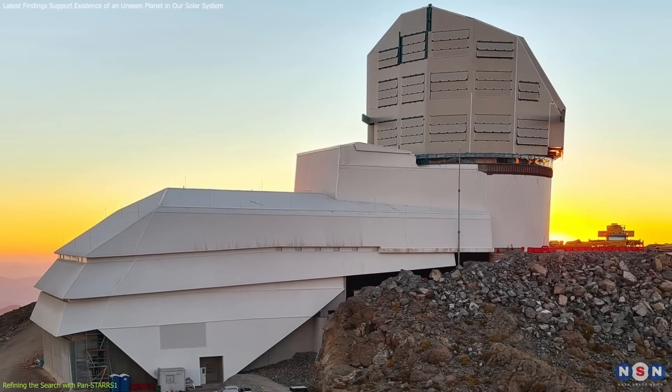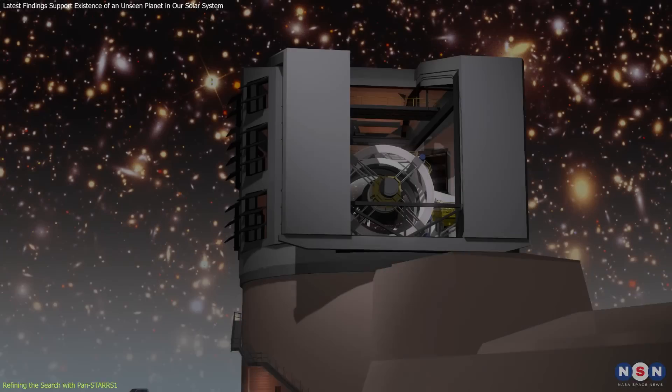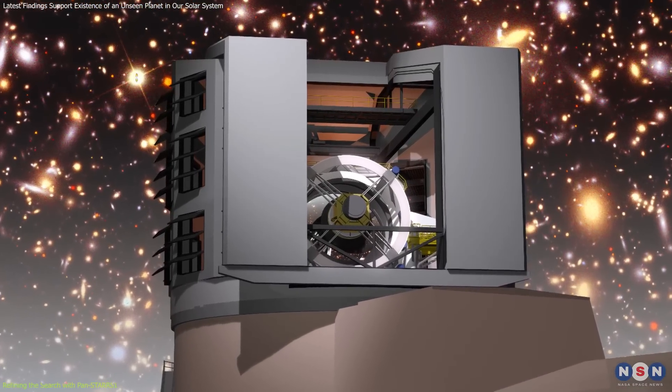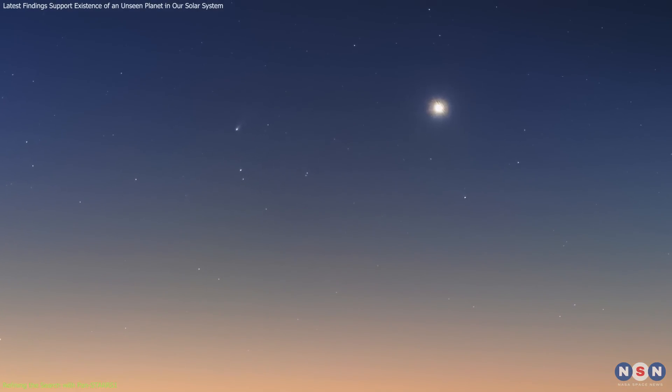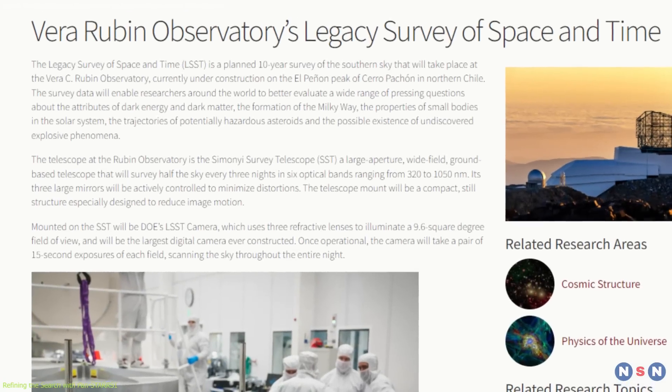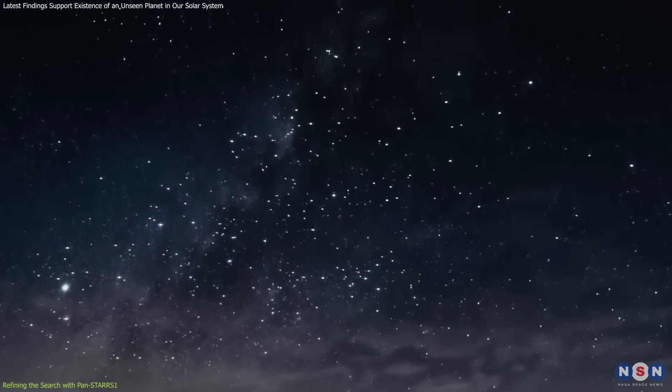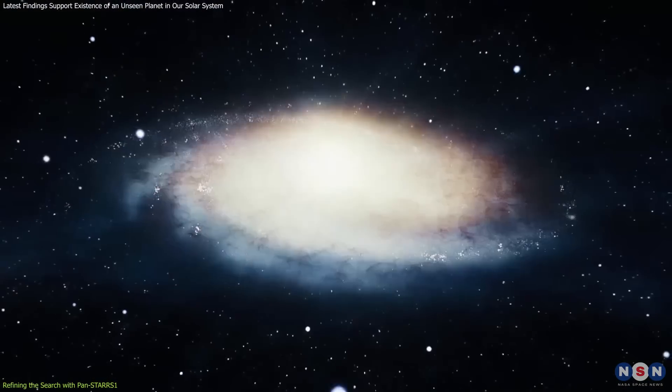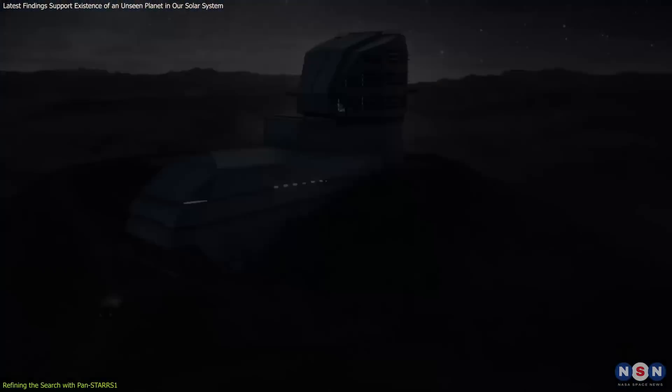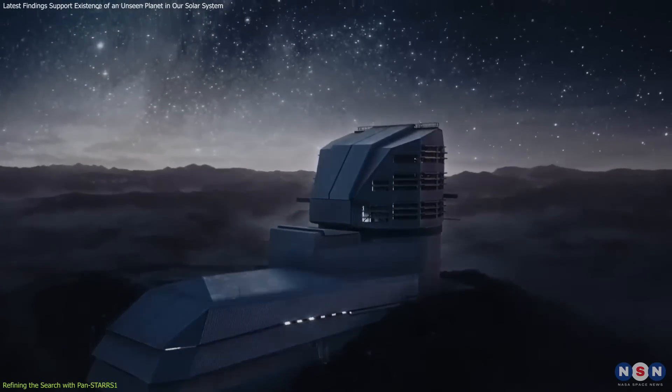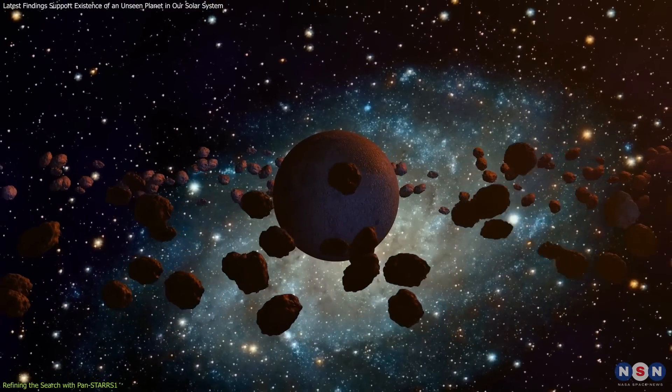The upcoming deployment of the Vera C. Rubin Observatory is poised to play a pivotal role in this next phase. Its advanced optical capabilities and wide-field camera will enable astronomers to scan the remaining search areas more effectively than ever before. The Observatory's Legacy Survey of Space and Time will conduct a decade-long sky survey, cataloging billions of objects and providing detailed data on regions where Planet 9 might be located. With its capability to detect faint objects over a vast area, the LSST is crucial for spotting the subtle signals that could reveal this elusive planet.